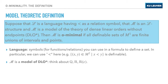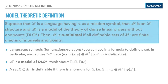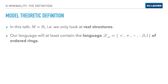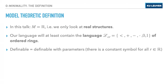Being a model of the theory of dense linear orders without endpoints means having a total order — just think of the rationals or the reals. This order does not necessarily have to be Archimedean. A set is definable if there is some formula for it. In this talk, the underlying set will be the real numbers. Most of the time I will use at least the language of ordered rings, so you can do addition and multiplication. Definable means definable with parameters, meaning you have a constant symbol for each real number — so you can multiply by pi, for instance.